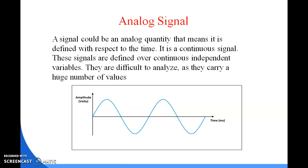Frequency is the measurement of the number of occurrences of a repeated event per unit of time. The unit of time may be a second or a millisecond. Within that time period, the number of occurrences of the repeated event is the frequency. Frequency can also be defined as the number of periods in one second.